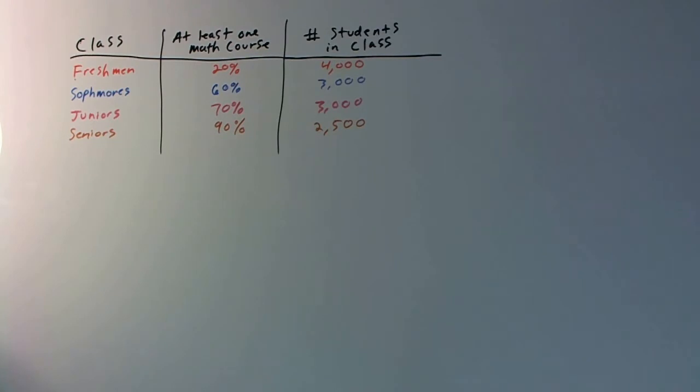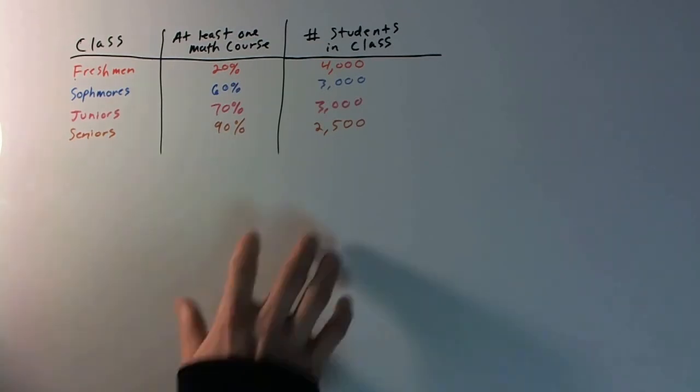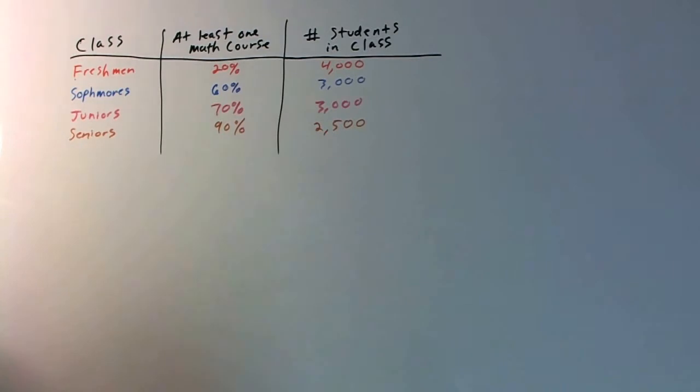Now let's also assume that there are 4,000, 3,000, 3,000, and 2,500 freshmen, sophomores, juniors, and seniors respectively — so that's in this column right here.